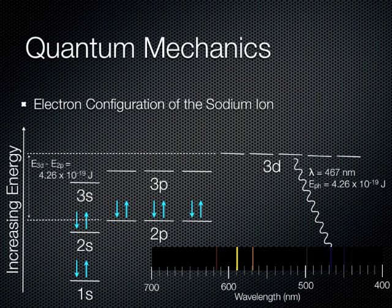This logic works both ways. If you know that the wavelength of the emitted photon is 467 nanometers, then the energy of the electron transition is 4.26 times 10 to the negative 19th joules. Similarly, if you know that the energy of the electron transition is 4.26 times 10 to the negative 19th joules, then you know that the wavelength of the emitted light is 467 nanometers.